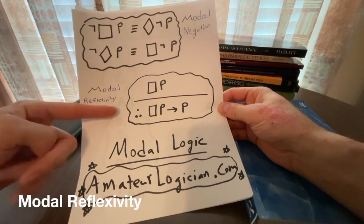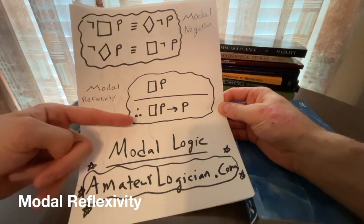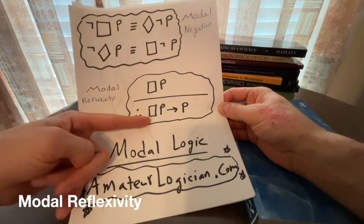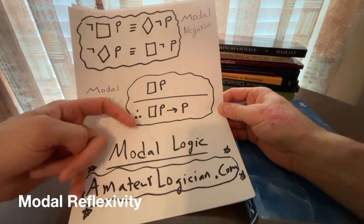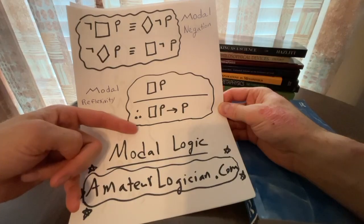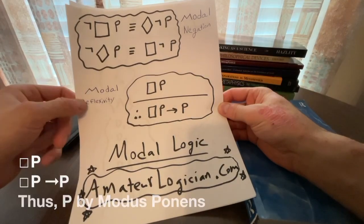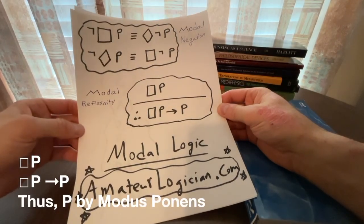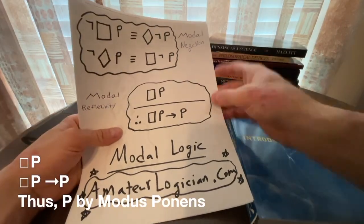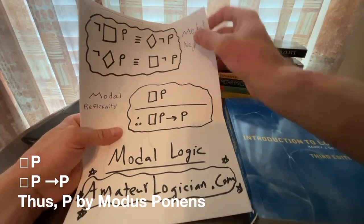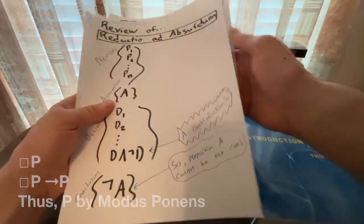With modal reflexivity, we really have an axiom. From box P, we can get if box P, then P. A modus ponens inference in propositional logic will allow us therefore to get P. From box P, we can get a P. We're going to be utilizing these in our proofs. And I have other videos that go into more depth if you need it.